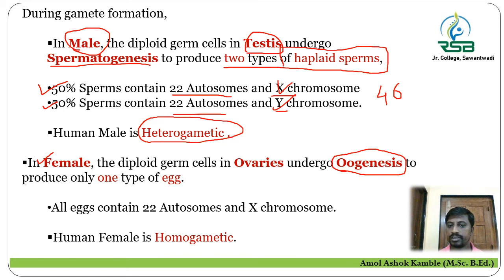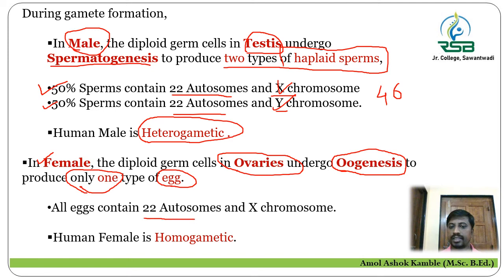In the ovaries, the diploid germ cell undergoes oogenesis, which produces only one type of egg. All eggs contain 22 autosomes and one X chromosome only. Therefore, the human female is known as homogametic.